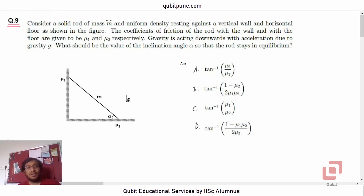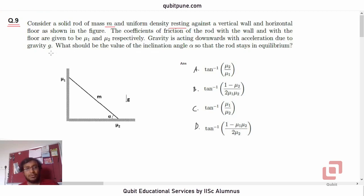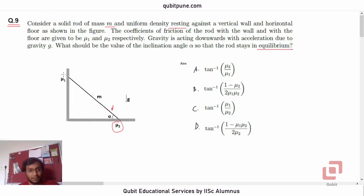The ninth question is based on mechanics. Consider a solid rod of mass m and uniform density resting against a vertical wall and a horizontal floor, as shown in the figure. The coefficients of friction of the rod with the wall and with the floor are given as μ1 and μ2 respectively. Gravity is acting downwards with acceleration g. What would be the value of inclination angle alpha so that the rod stays in equilibrium? The angle alpha is shown in the figure — this is the rod in contact with two surfaces: the floor where the coefficient of friction is μ2, and the vertical wall where the coefficient of friction is μ1.